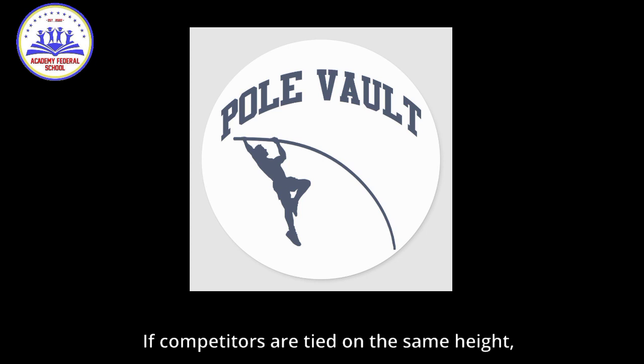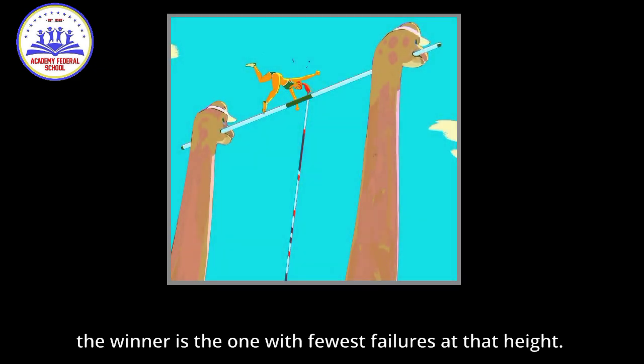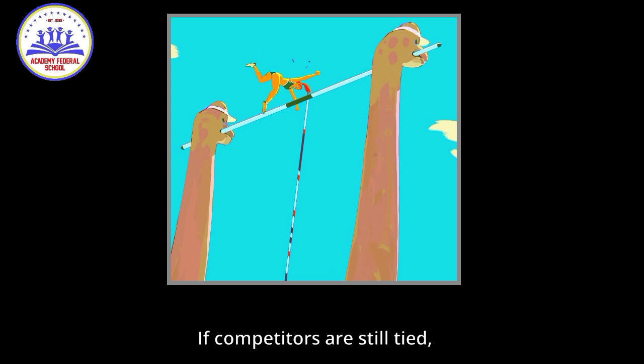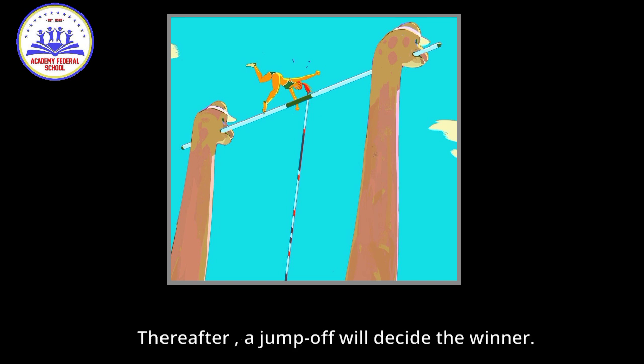If competitors are tied on the same height, the winner is the one with the fewest failures at that height. If competitors are still tied, the winner will have had the fewest failures across the entire competition. Thereafter, a jump-off will decide the winner.